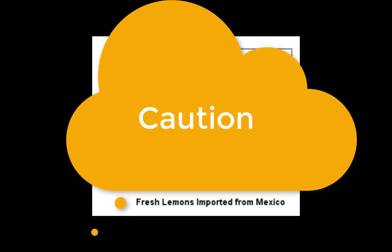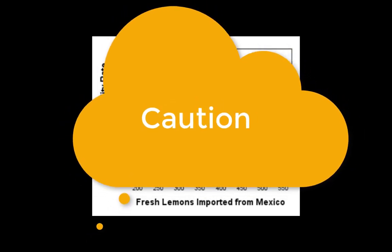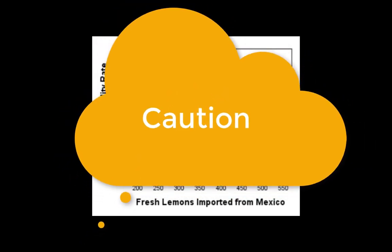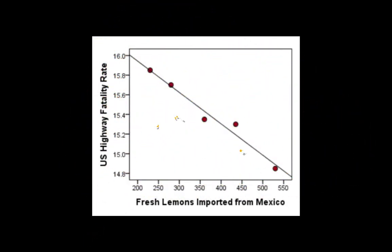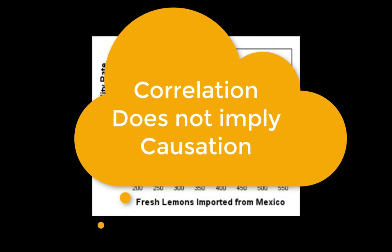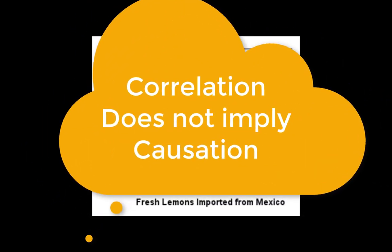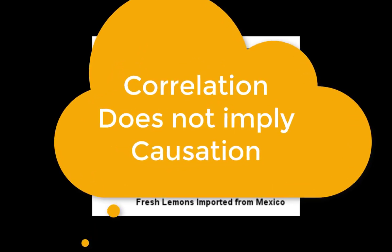Something to be cautious of when you're looking at the relationship between two quantitative variables is the misinterpretation that correlation implies causation. Remember that when you think about causation, it has to be that one variable directly causes a change in another variable.